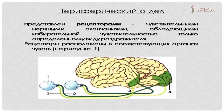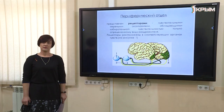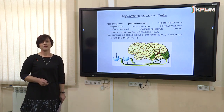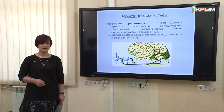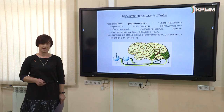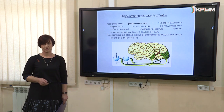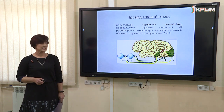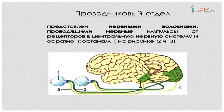Какие клетки в нашем организме принимают на себя все раздражения из окружающего мира? Конечно же рецепторы — они составляют периферическую часть анализатора. Рецепторы отличаются своей избирательностью, имеют определённый порог чувствительности, действуют по определённому качеству и силе. Любой рецептор преобразует раздражение в нервный импульс, и эти нервные импульсы по чувствительным нейронам отправляются в центральную нервную систему — она составляет проводниковую часть анализатора. Нервные волокна собираются и образуют отдельные нервы — на рисунке это обозначено цифрами 2 и 3.